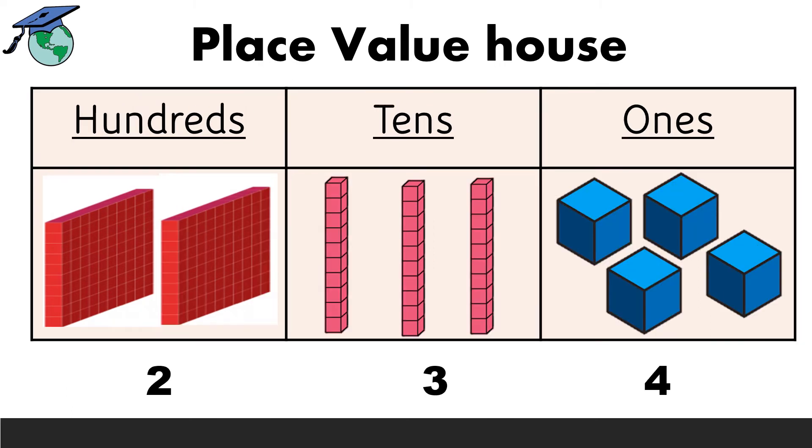Place value house. This is a house where we have ones, tens and hundreds. You can see there are four ones: 1, 2, 3, 4. And over here there are three tens: 1, 2, 3. Over here we have a group of 10. That is, 10 times in hundreds. So, there is two hundreds.